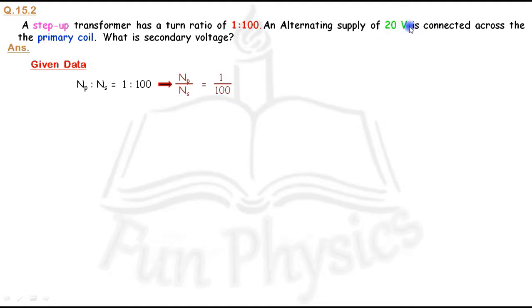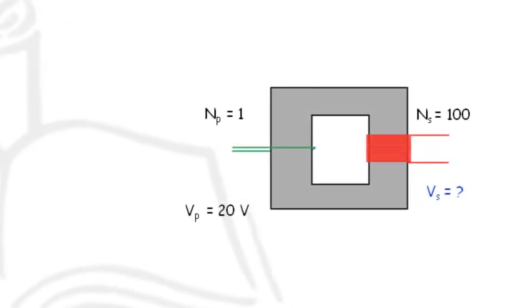The primary voltage, which we denote as Vp, is 20 volts. We have to find the secondary voltage. So in this figure, the number of turns on the primary coil is 1 and the primary voltage is 20 volts, and the secondary coil number of turns is 100.